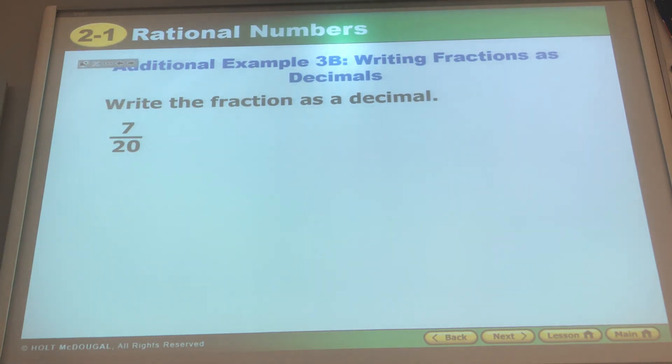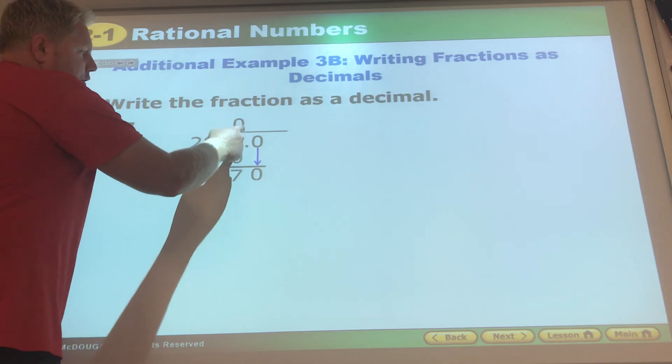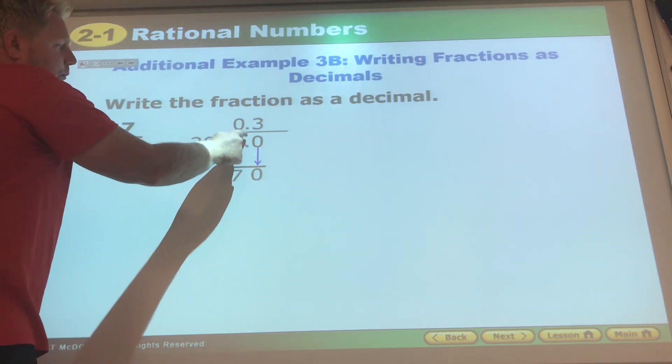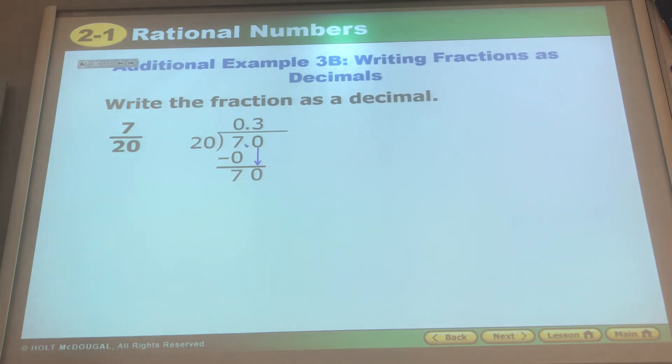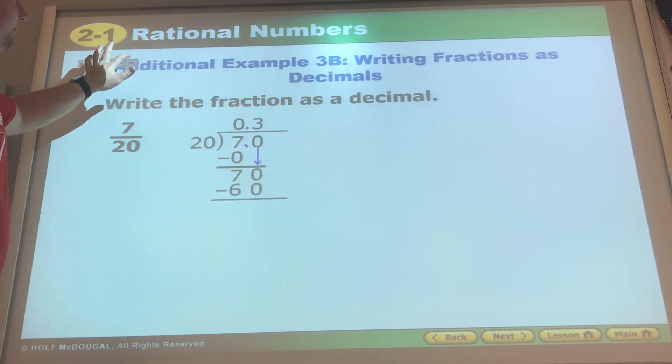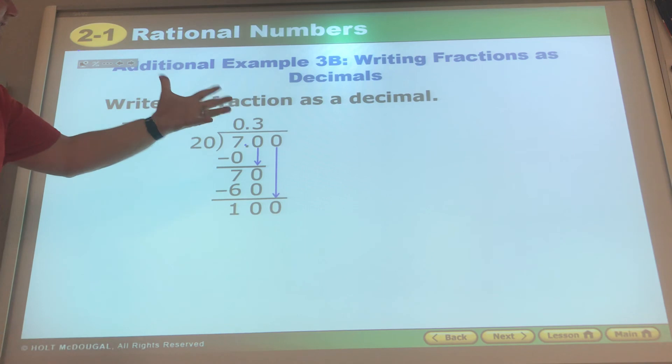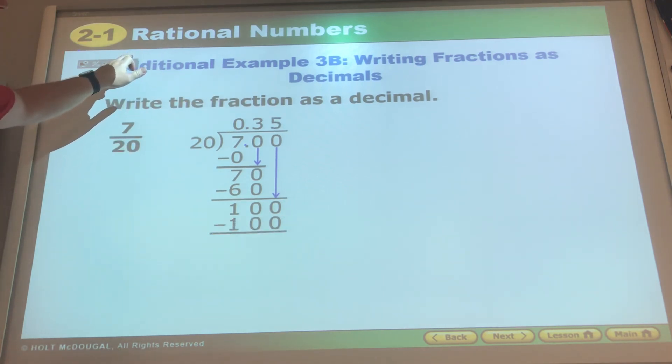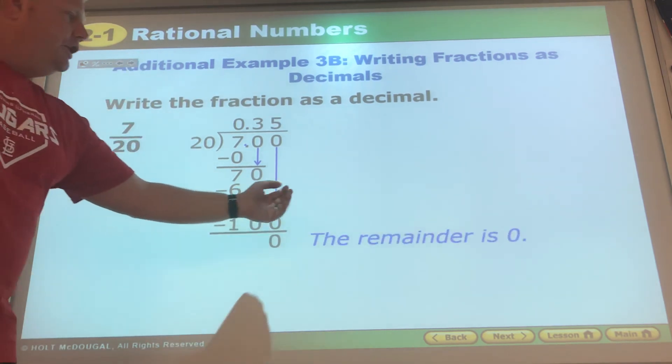Write the fraction as a decimal. Numerator divided by the denominator, numerator inside. It won't go in there, so they do the subtraction. The decimal here needs to make sure it is up on top as well, bring it straight up, that's where most of you had your mistake. 20 will go into 73 times, so we do our subtraction. We bring another zero down, we can keep bringing zeros down forever if we'd like. 20 will go into 100 five times and we do our subtraction, we get to zero. The remainder is zero, this is a terminating decimal.